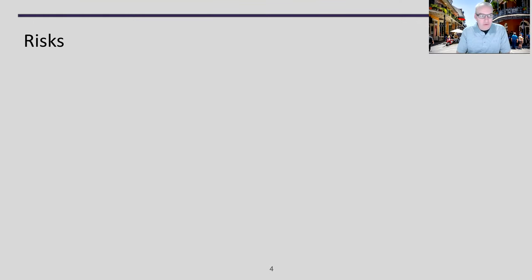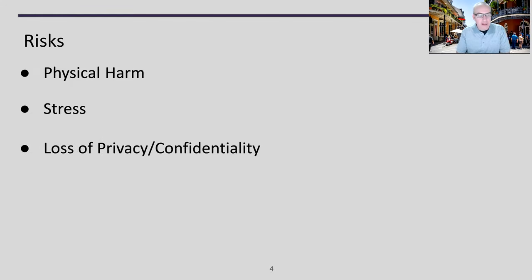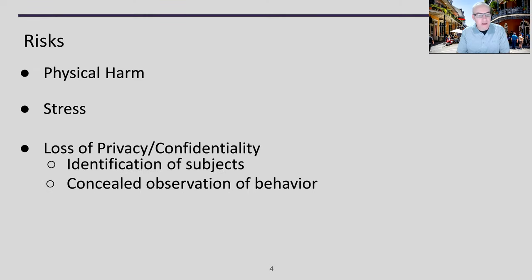One thing that factors into both of those is risk. We have to think about different kinds of risks that might show up in studies. The first is physical harm, which is less common unless you're doing something like eye tracking or physiological sensors. More common in educational settings are stress — are we doing something that might cause students stress — or loss of privacy and confidentiality, such as gathering information that if disclosed might harm a student's reputation, or conducting concealed observation without consent.